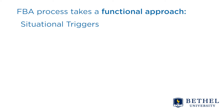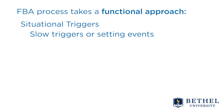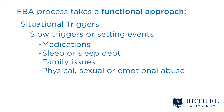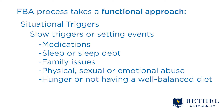Usually there are at least a couple of functions behind a behavior. Slow triggers, or setting events, include things like medications — such as if a student forgot to take them for mental health issues. Other examples include sleep debt, family upheaval or crisis, physical, sexual, or emotional abuse, hunger, an unbalanced diet leading to severe constipation and pain, or other health and medical issues.